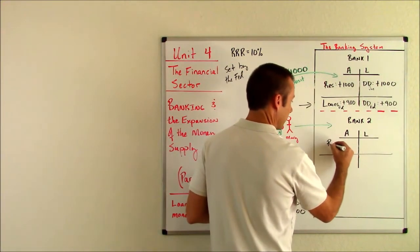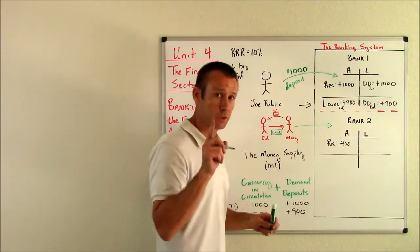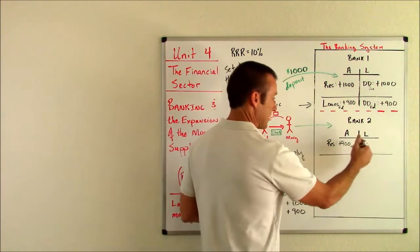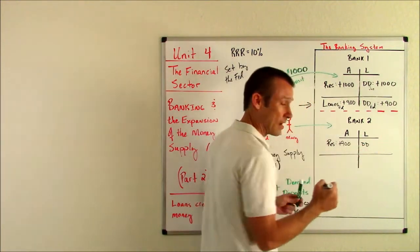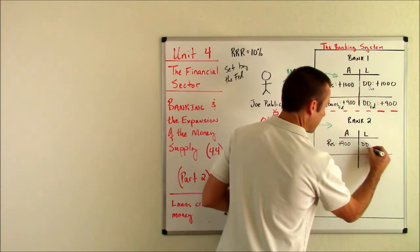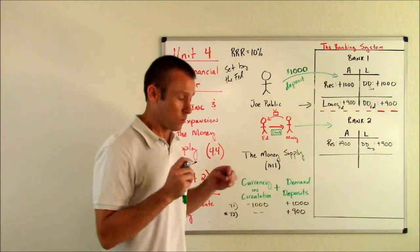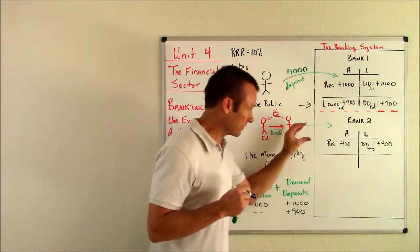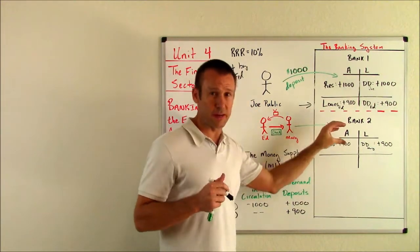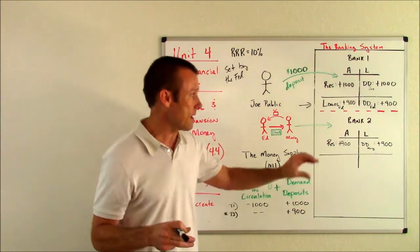Bank two is going to see their reserves go up by $900. And Mary is going to get her checking account, her demand deposits, credited $900. Now we're not done really with this deposit.